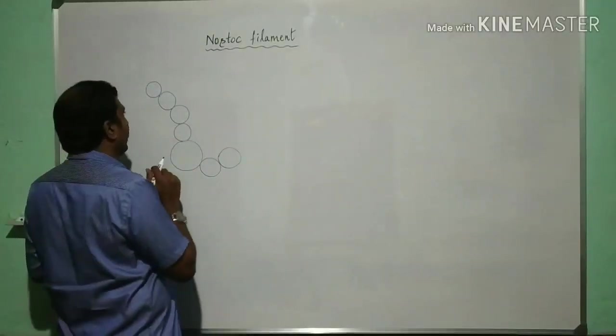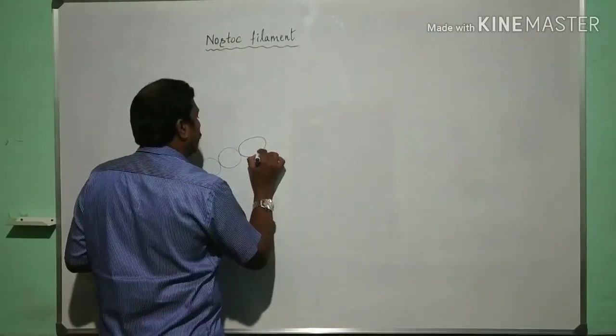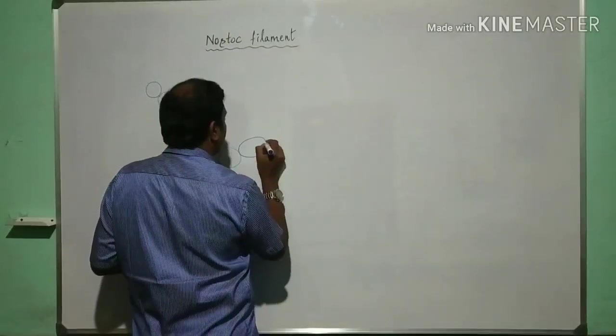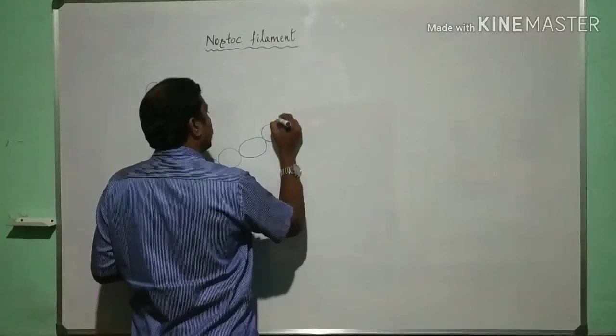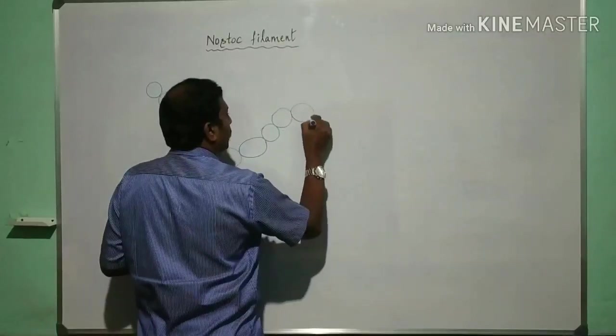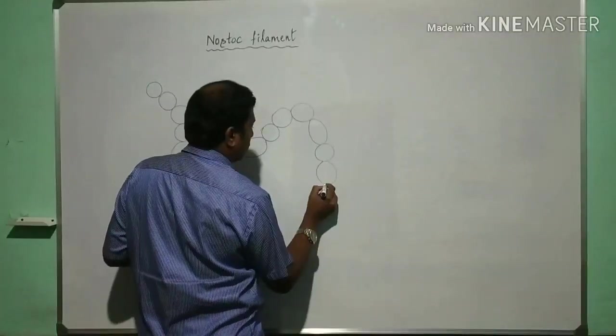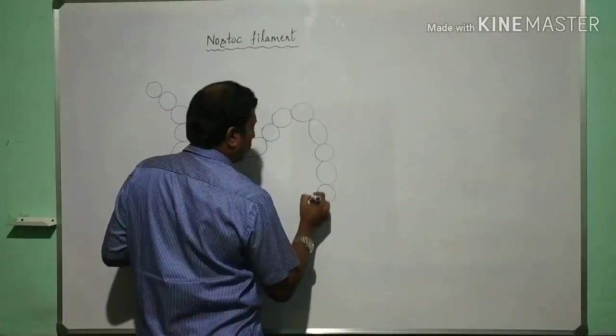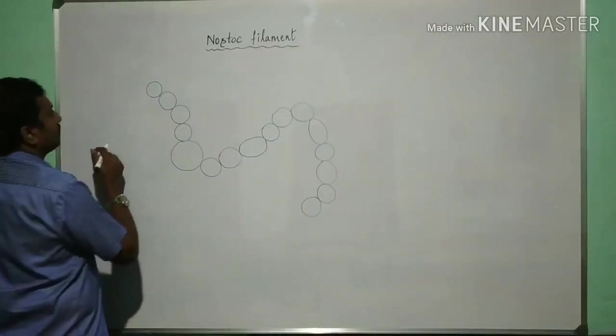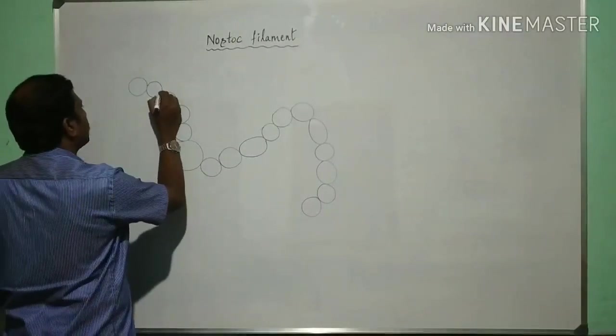You should draw spherical cells, the larger one is called akinete. The elongated one, you can consider it as heterocyst. Like this, and like this. Few cells to start with.